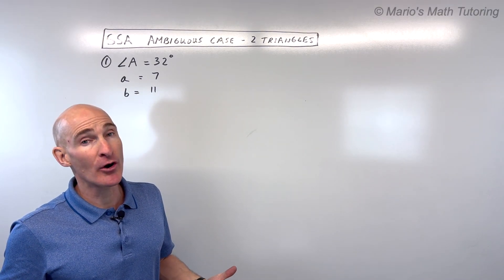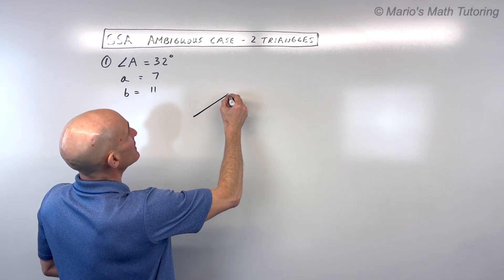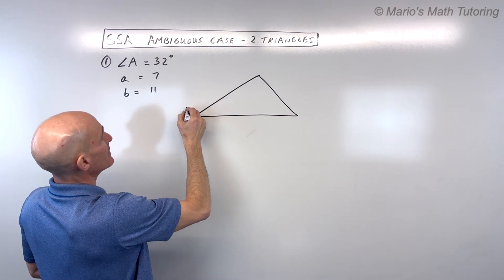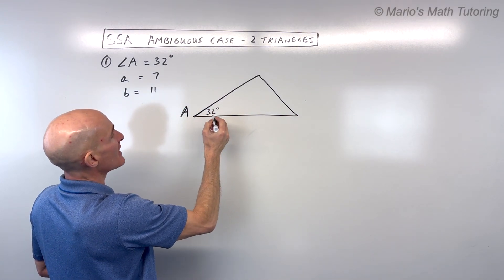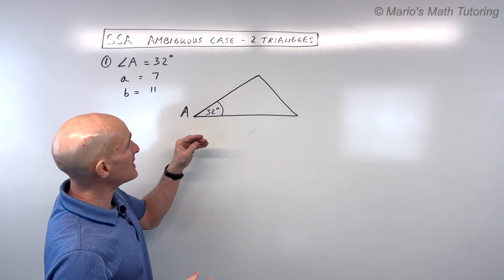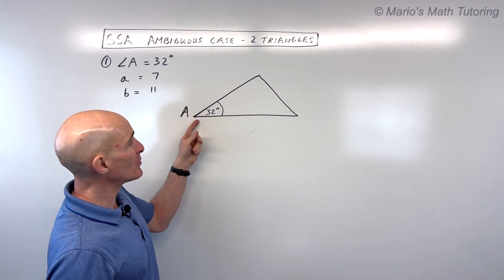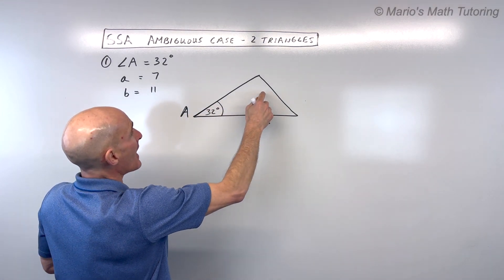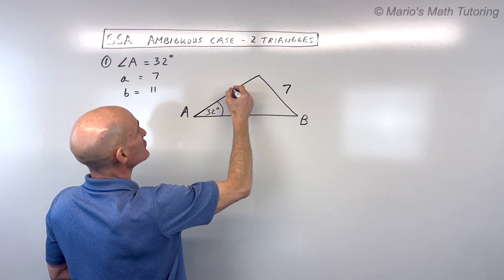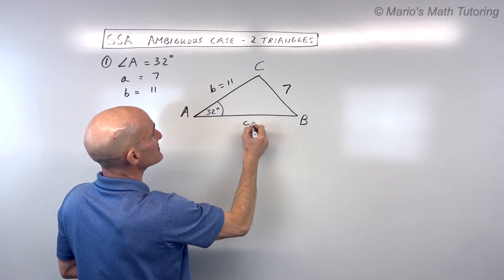Students sometimes ask how to set up this triangle. Let's draw it in a general way. Here's our angle A at 32 degrees — it doesn't have to be perfect. For the side-side-angle case, I always put the angle on the left. The side opposite angle A is 7, angle B is here with side B of 11 across from it, and that makes angle C with side C over here.